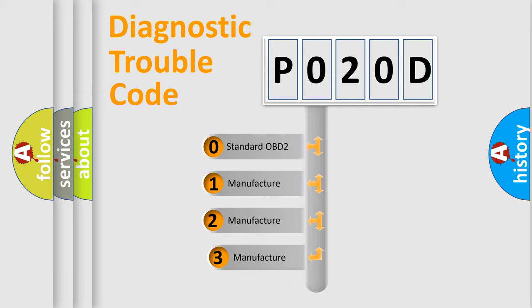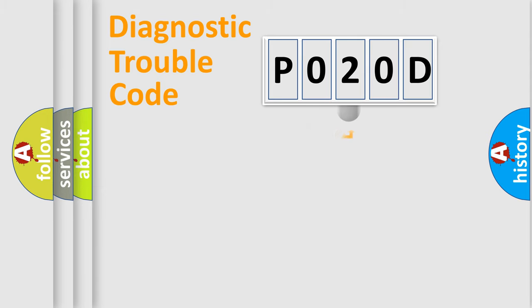If the second character is expressed as zero, it is a standardized error. In the case of numbers 1, 2, or 3, it is a more precise expression of the car-specific error.